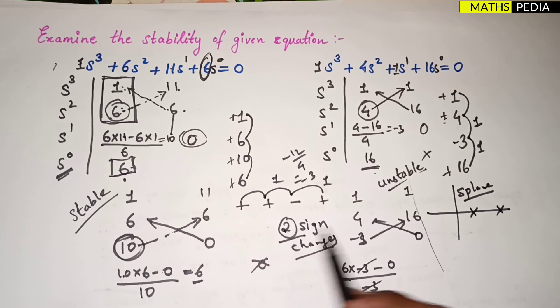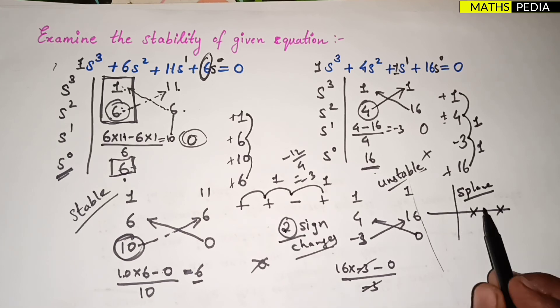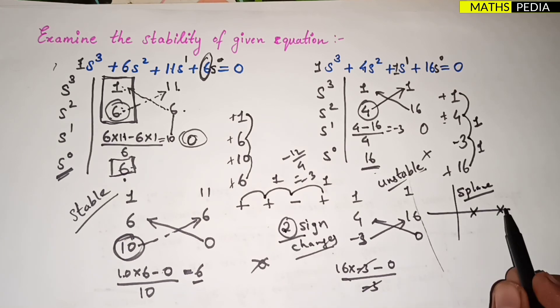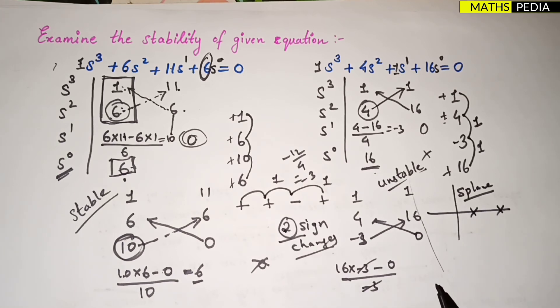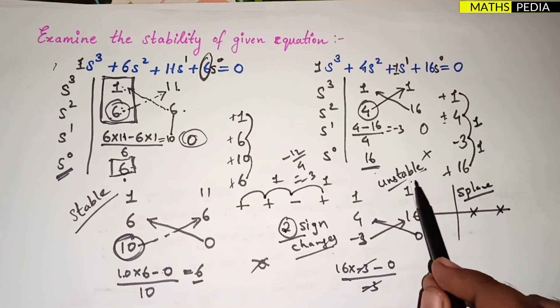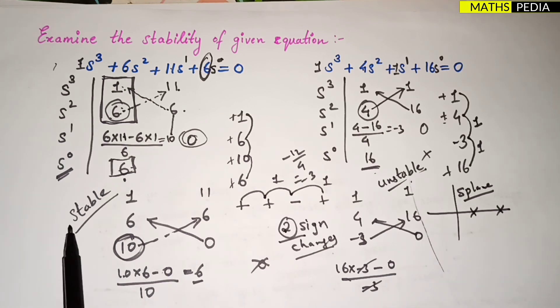With two sign changes, there are two roots lying on the right half of the s-plane. Therefore, this system is unstable, whereas the first system was stable.